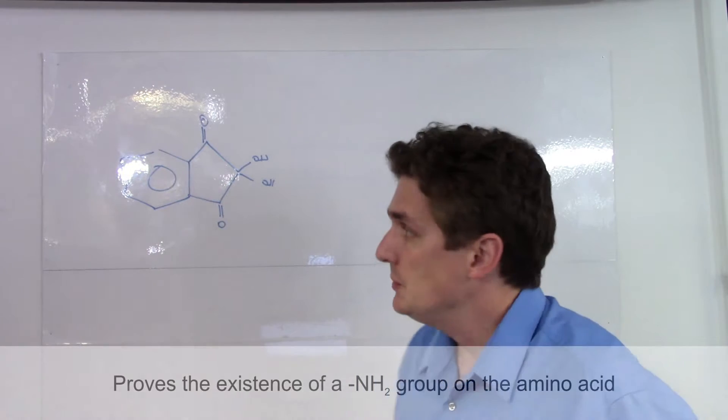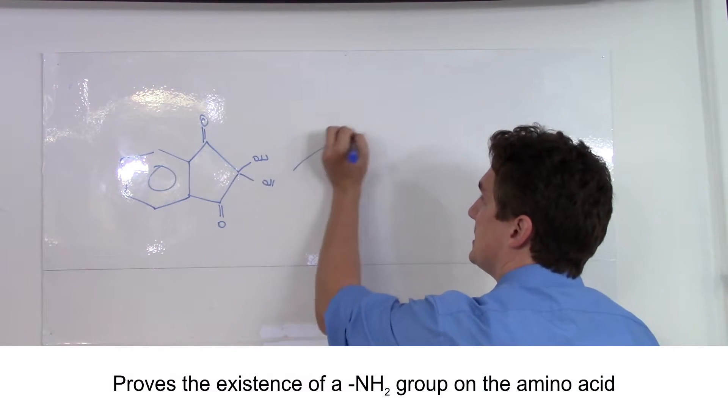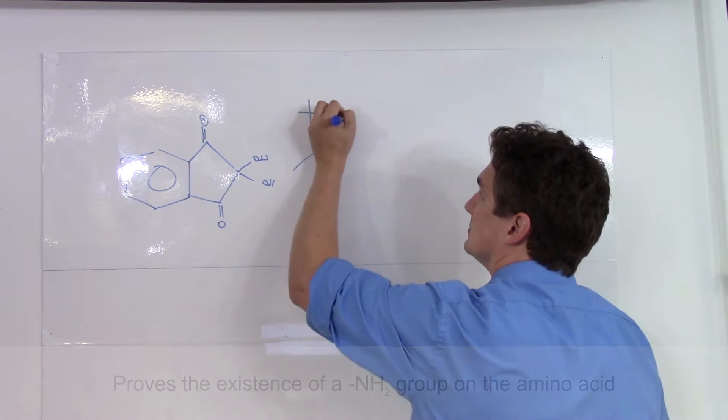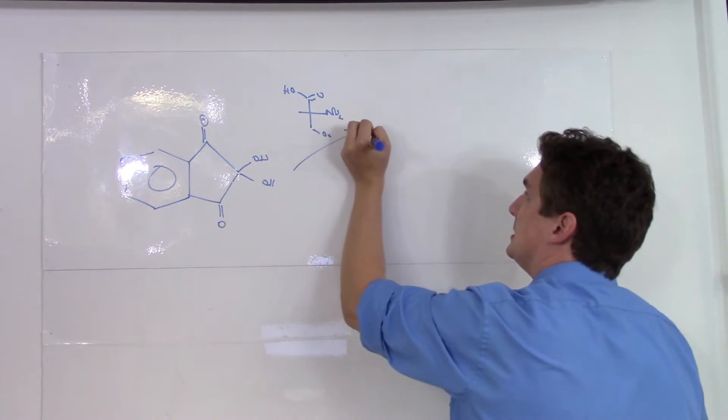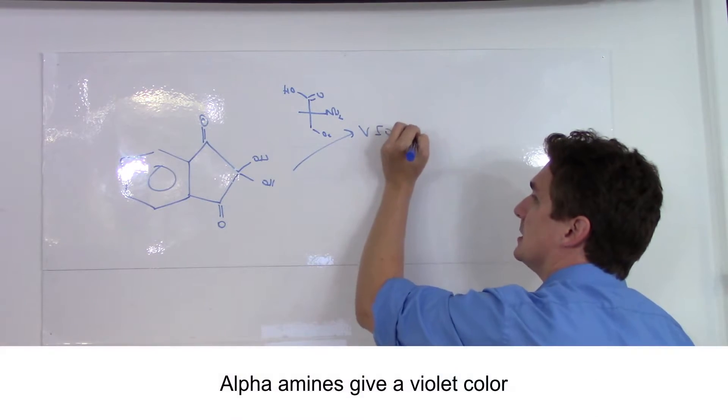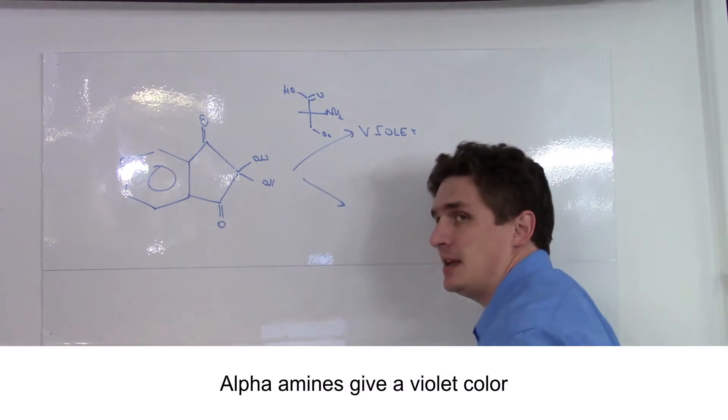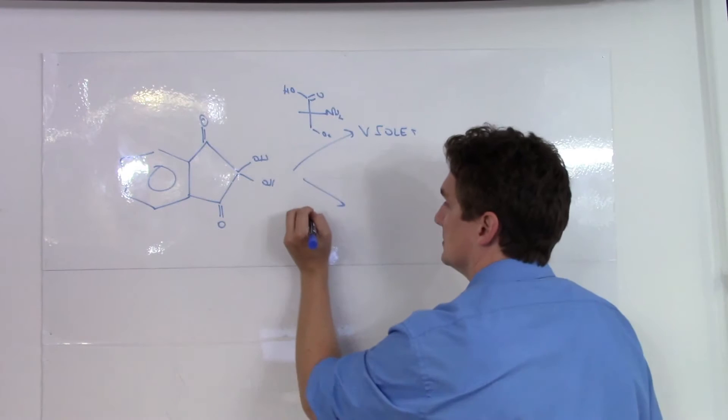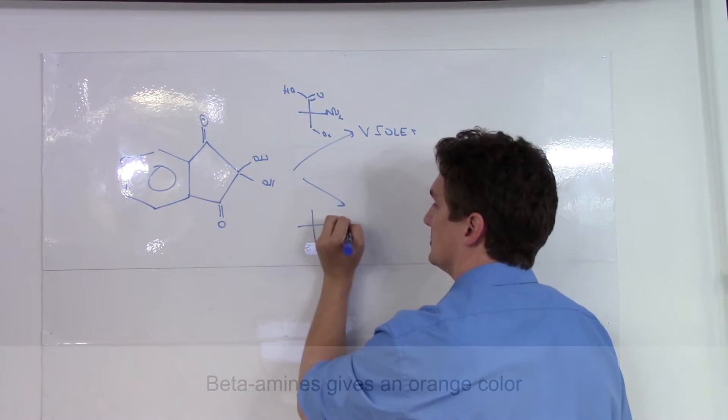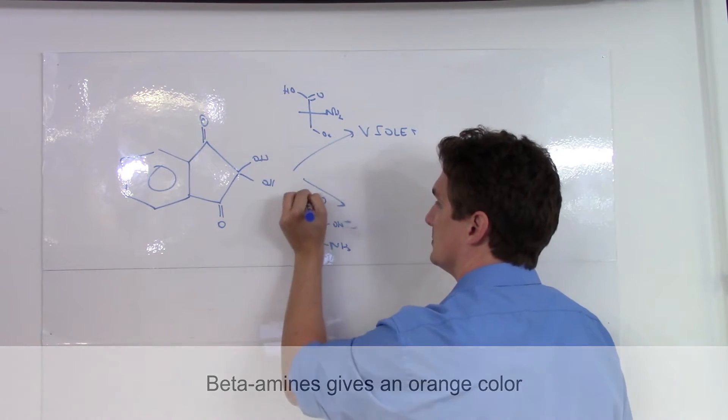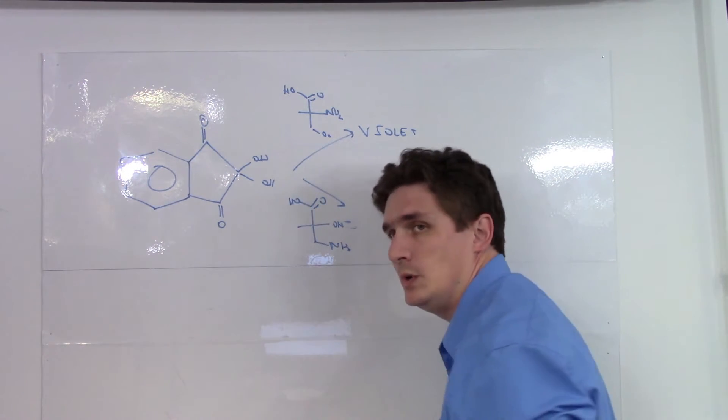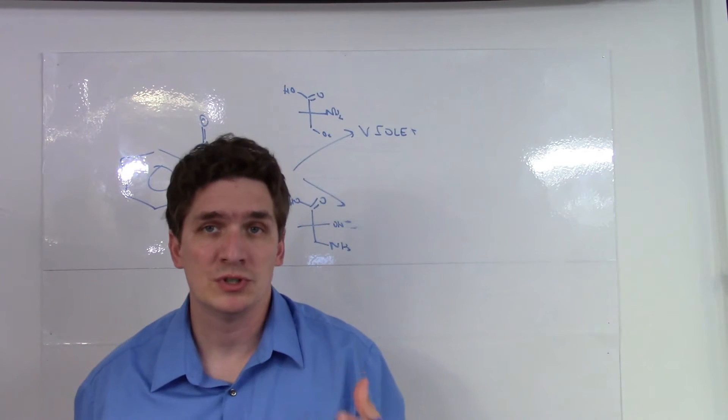Now, there are two results for this. In the case of an alpha amine, we will end up getting a violet color. In the case of a beta amine, we will end up getting an orange color.